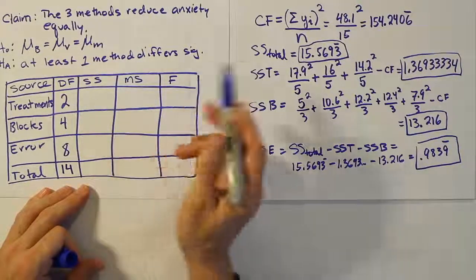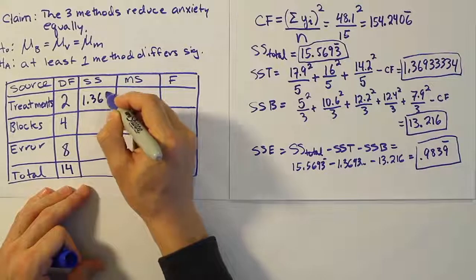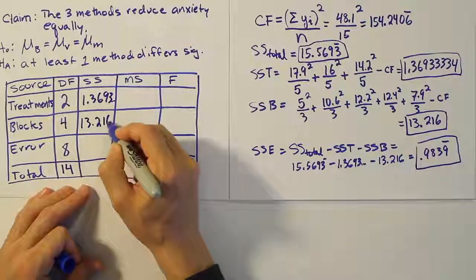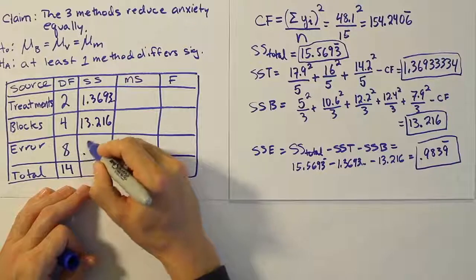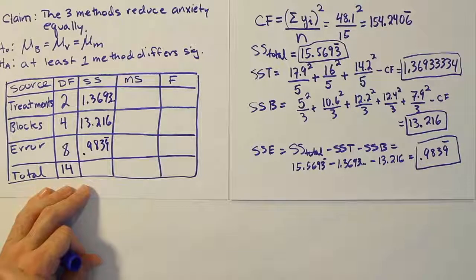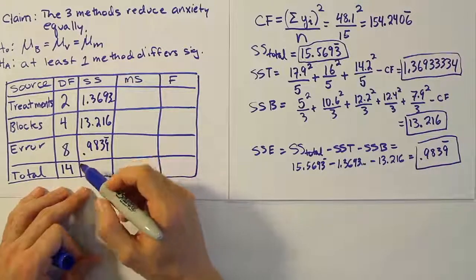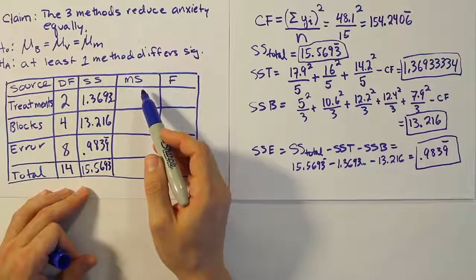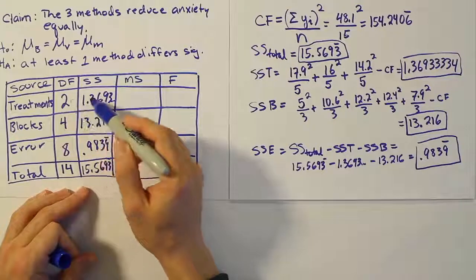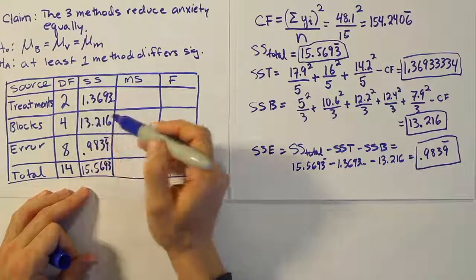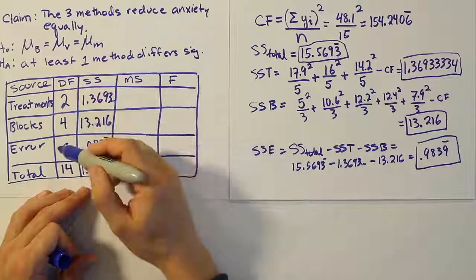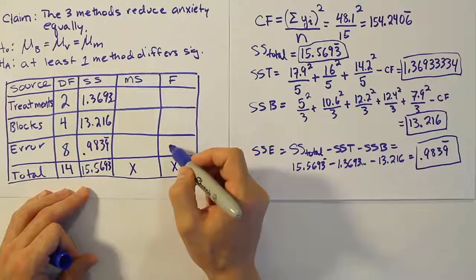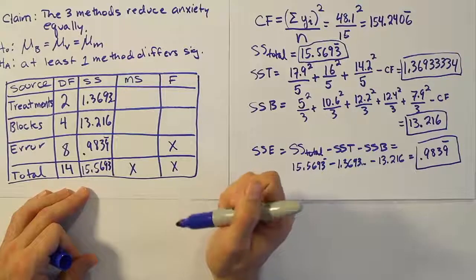For sum of squares: SST = 1.3693 repeating, SSB = 13.216, SSE = 0.9839 repeating, and SS Total = 15.5693 repeating. For the mean squares, MST = SST ÷ 2, MSB = SSB ÷ 4, and MSE = SSE ÷ 8. We don't need mean square for the total row.